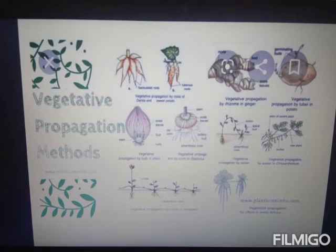Asexual reproduction occurs in very simple or single-celled organisms. The common types of asexual reproduction are fission, spore formation, budding, fragmentation, zoospores, conidia, gemmules, and vegetative reproduction.